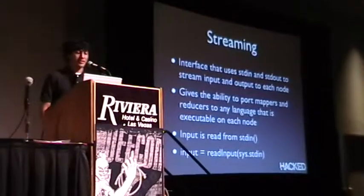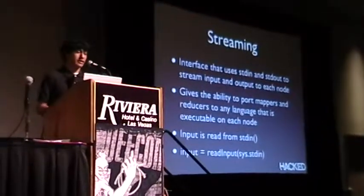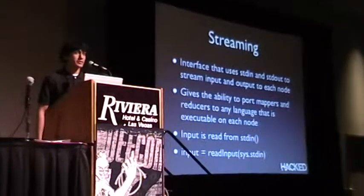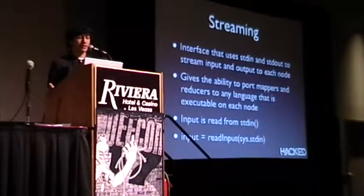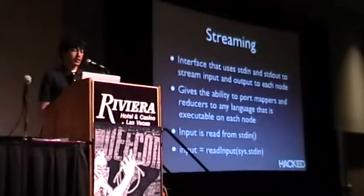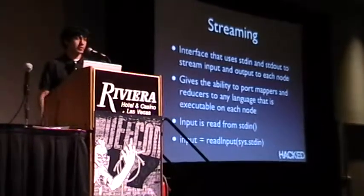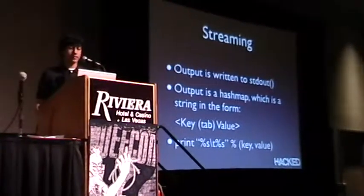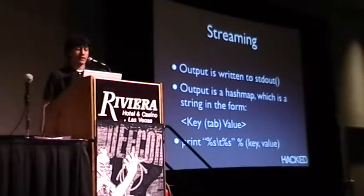Now we're going to talk about streaming. Streaming is really cool. It's basically an interface that uses standard in and standard out to stream the input and output to each node. It gives you the ability to port mappers and reducers to any language that can read from standard in and write to standard out. Input is read from standard in — here's an example in Python where the input variable is sys.stdin running through the pre-input function. Output is written to standard out as a hash map in the form of key-tab-value.